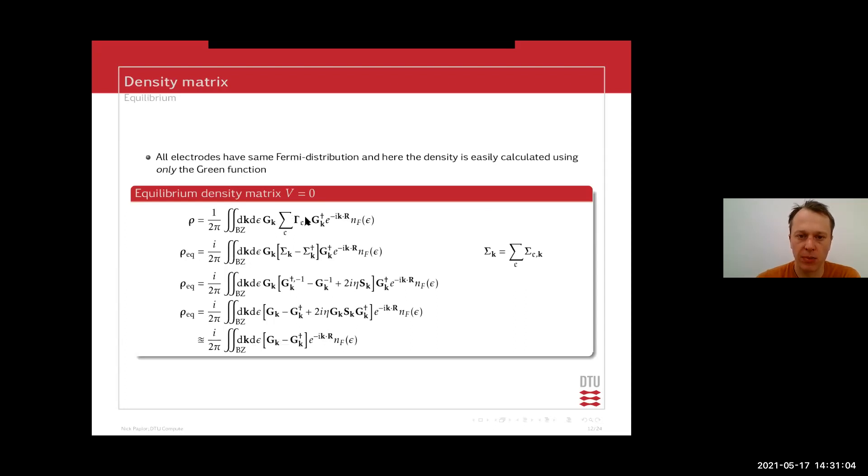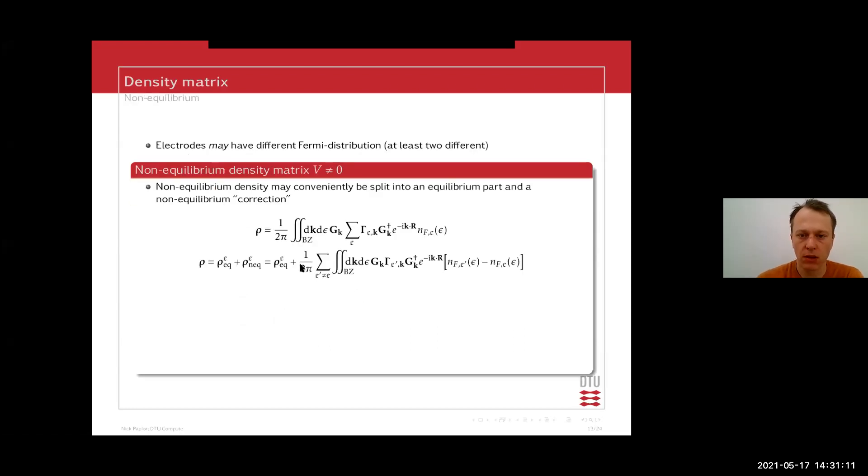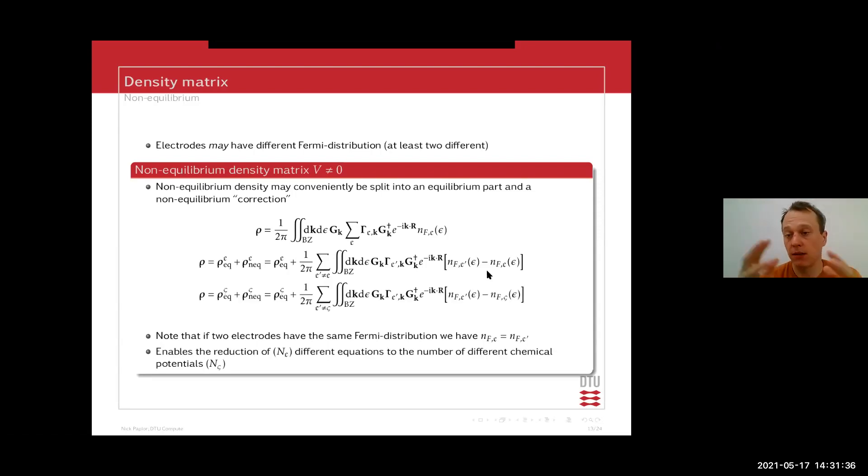You'll notice up here that this is the spectral function where you have a triple matrix product, but down here it's only the Green's functions. Then to add some of the non-equilibrium parts, we make a trick which adds the spectral functions in a small bias window. So that depends on the chemical potentials and the difference between the chemical potentials. But in some cases, you have the case that's particularly true if you have more than two electrodes, you may come up in the case where you have two electrodes with the same chemical potential. And if that's the case, you can reduce this equation to something that's a little bit simpler. But it's still quite heavy in this case.